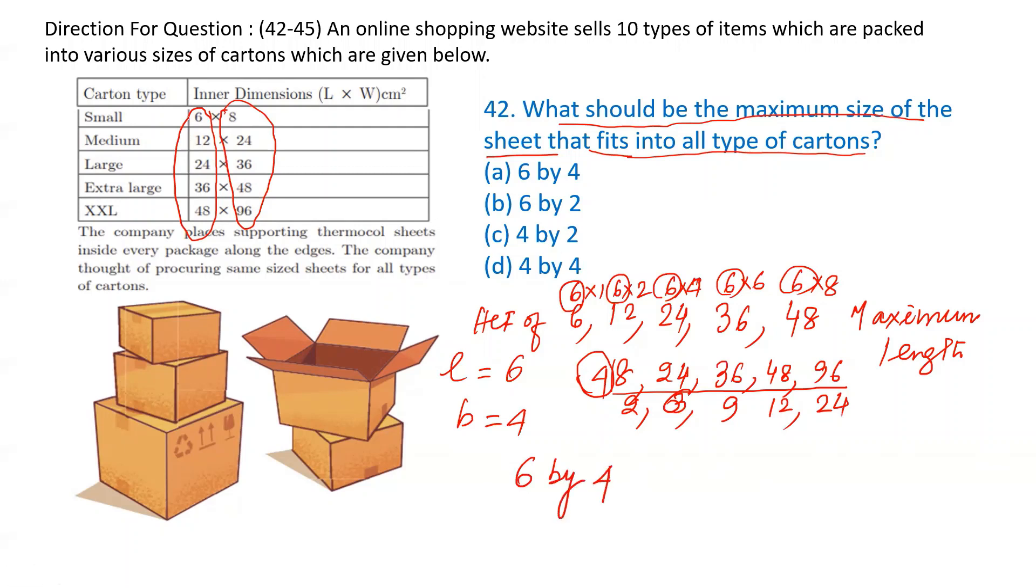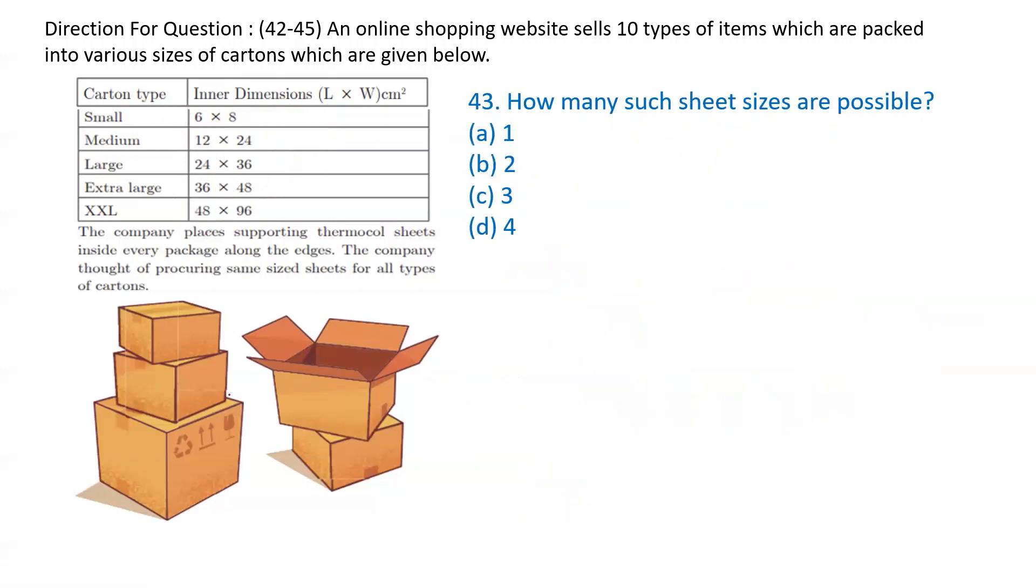First you get HCF of all lengths, HCF of all breadths, then write in this form 6 by 4. So A is 6 by 4. So A is the answer. The sheet should be 6 cm by 4 cm, so that you can be making all types of cartons.